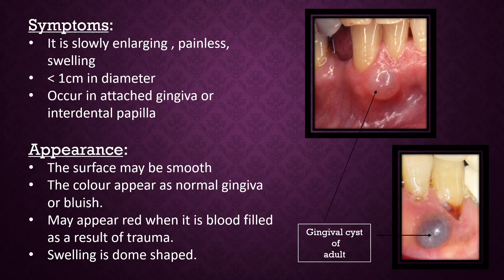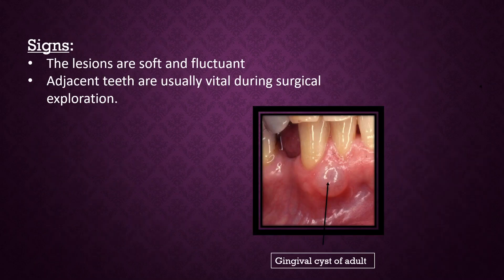Appearance — the surface may be smooth. The color appears as normal gingiva or bluish. They may appear red when blood-filled as a result of recent trauma. The swelling is dome shaped. Signs — the lesions are soft and fluctuant, and adjacent teeth are usually vital during surgical exploration.